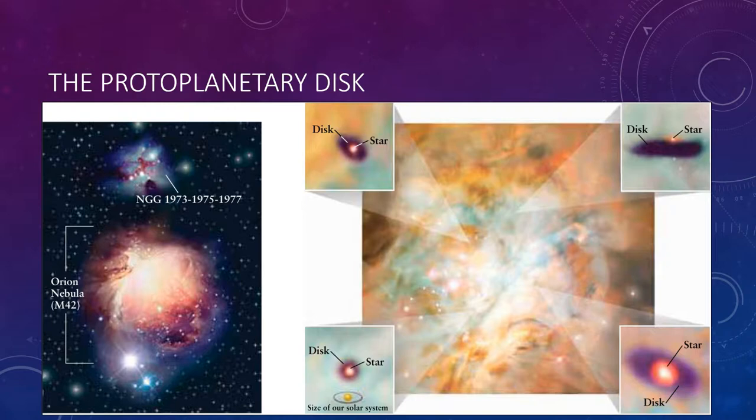Here are some other protoplanetary disks that have been photographed, so you can see the insets of four of them at varying angles of viewing. The Orion Nebula is what we call a star-forming region, located about 1,500 light-years from Earth.